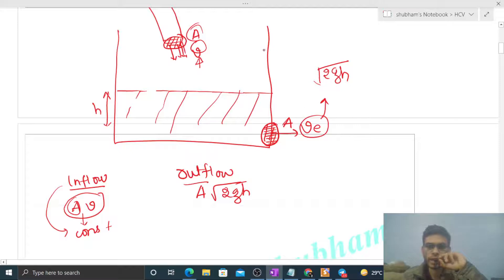So initially this tank was empty, right? It means the height of water level in this tank was zero. It means the velocity of efflux, square root of 2gh, was zero. It means outflow, that is A times square root of 2gh, was also zero. So initially we can say that inflow was greater than outflow because initially outflow was zero.